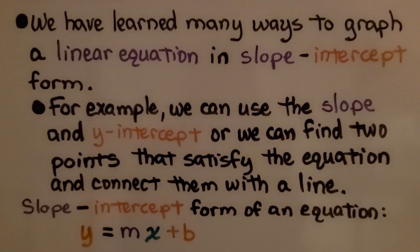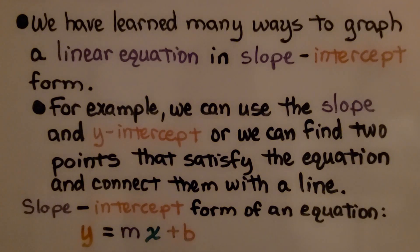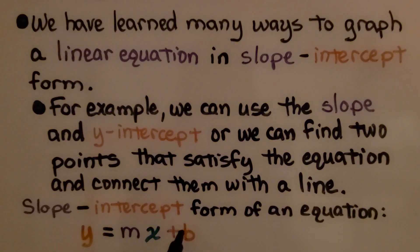We've learned many ways to graph a linear equation in slope-intercept form. For example, we can use the slope and the y-intercept, or we could find two points that satisfy the equation and connect them with a line. The slope-intercept form of an equation is y equals mx plus b, where m is the slope, x and y are values that satisfy the equation, and b is the y-intercept where the line crosses the y-axis.